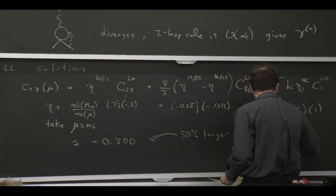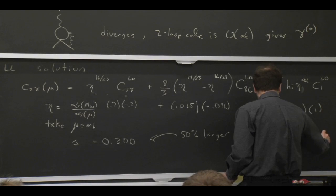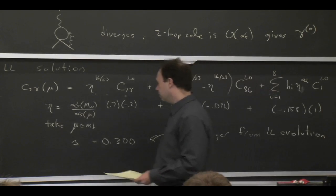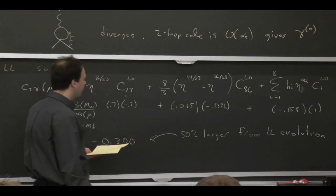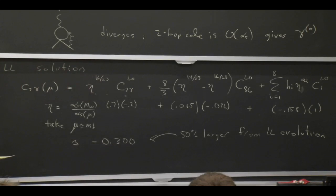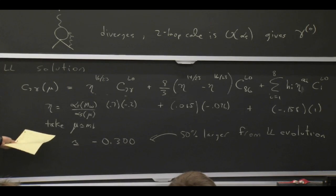And actually, people go two orders beyond what I'm talking about here. They go to next to next to leading log order when they really do precision B→sγ physics. So some of the state-of-the-art calculations of multi-loop diagrams have been done exactly for B→sγ because these effects are so important for looking for new physics.